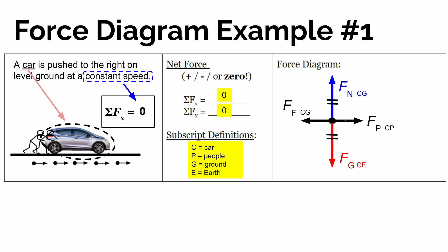And we're going to label that the force of friction on the car by the ground, because the ground is what's applying the frictional force against the car. Then we can use some notation here to show that the pushing force is the same size as the frictional force, and the normal force pointed up is the same size as the gravitational force pulling down.